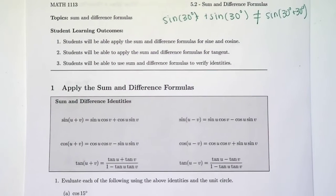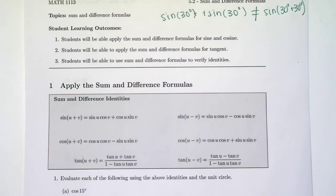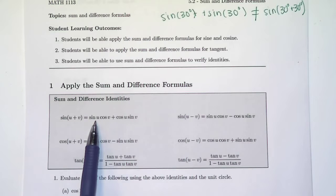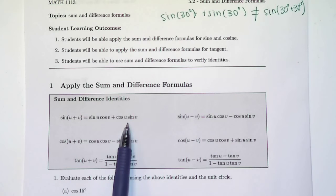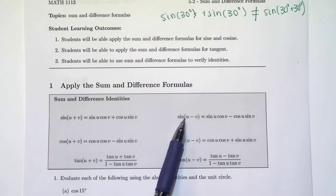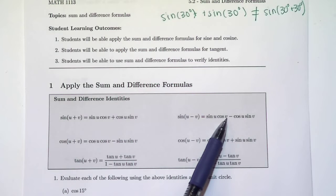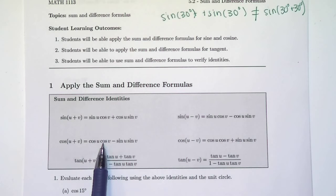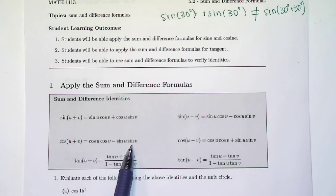So let's look at our sum and difference formulas. When we have our sine function and we're adding angles inside of the sine function, you take sine of the first angle times cosine of the second angle plus cosine of the first angle times sine of the second angle. And when we're subtracting, you just change the addition to subtraction. Cosine's a little different. When we're adding inside of cosine, we actually do all of the cosine first — cosine of the first angle times cosine of the second angle minus sine of the first angle times sine of the second angle.